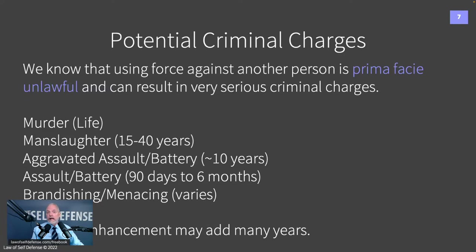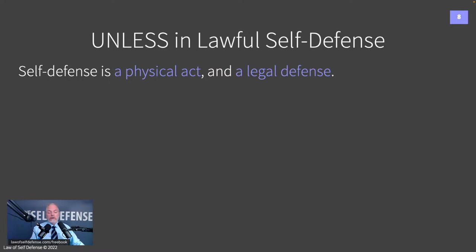If a gun is used in the offense, a firearms sentencing enhancement may apply that can be substantially longer than the underlying sentence. For example, in the Alec Baldwin involuntary manslaughter case, the underlying sentence would be 18 months, but a mandatory minimum five-year gun sentencing enhancement could bring the total to 6.5 years — more years for the gun enhancement than for the underlying manslaughter itself.